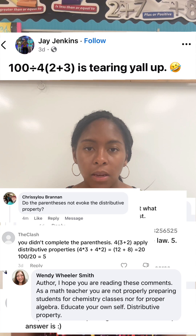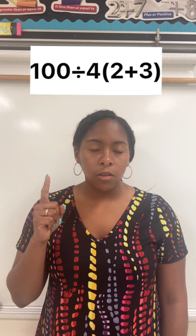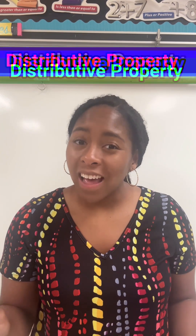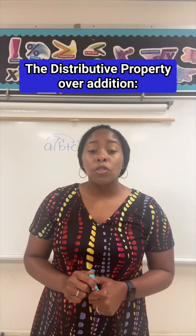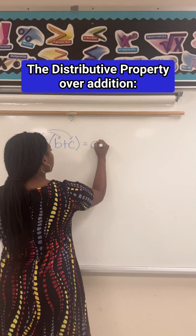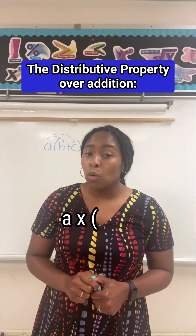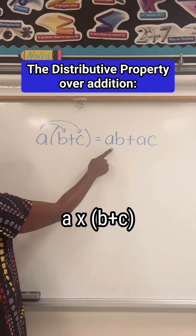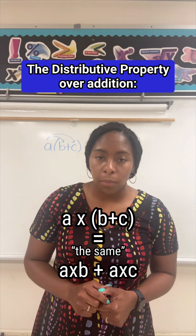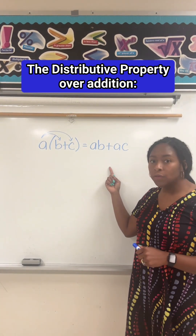The amount of people that said we needed to distribute for this expression is alarming, so I had to make a video. First, we need to understand what the distributive property actually is and what it's used for. The distributive property of addition states that a times (b + c) equals ab + ac — meaning multiplying a single value a by the sum of two or more values b and c is the same as distributing multiplication to both values separately. Importantly, this operation removes the parentheses.